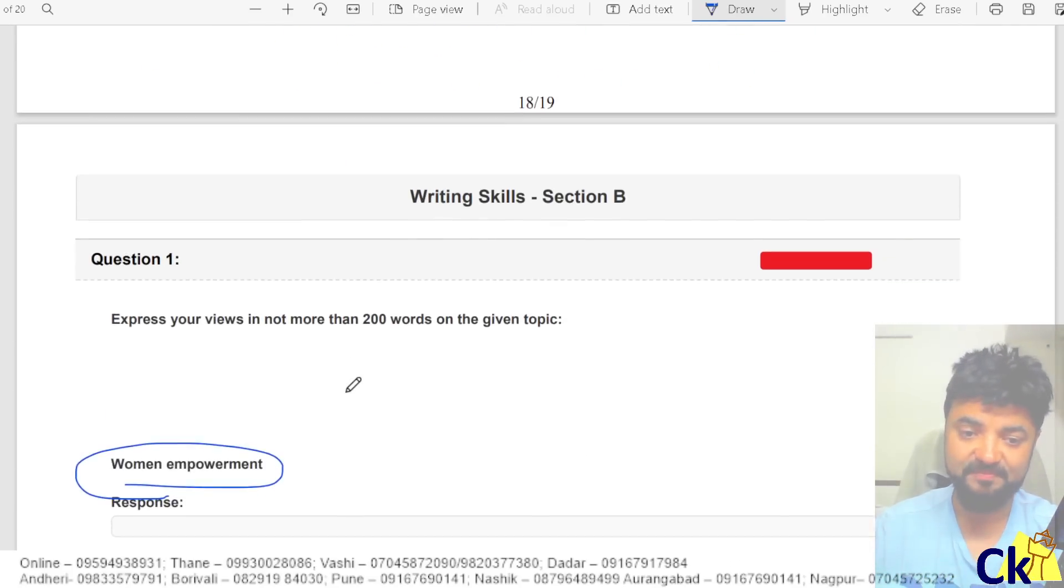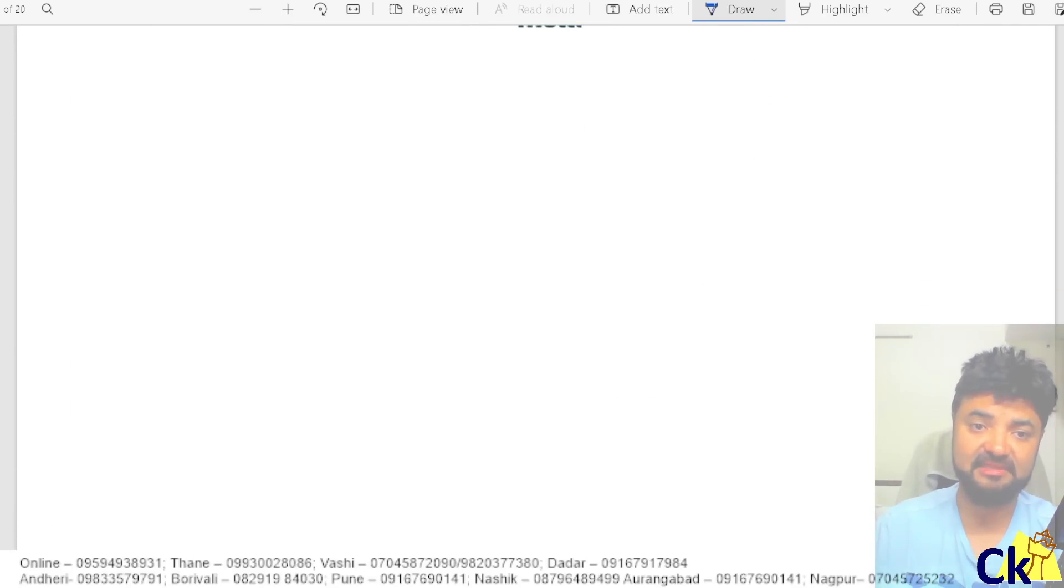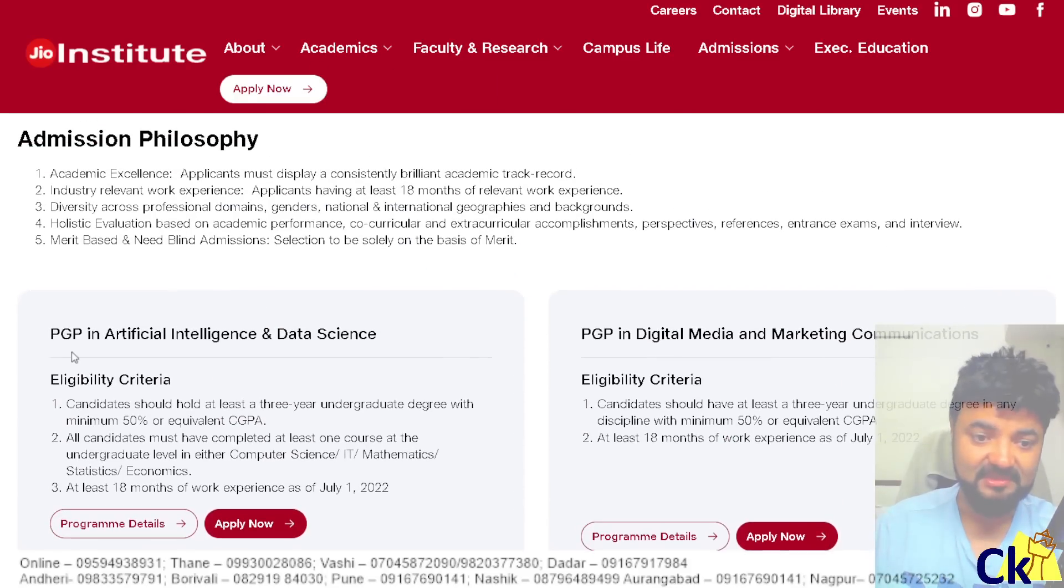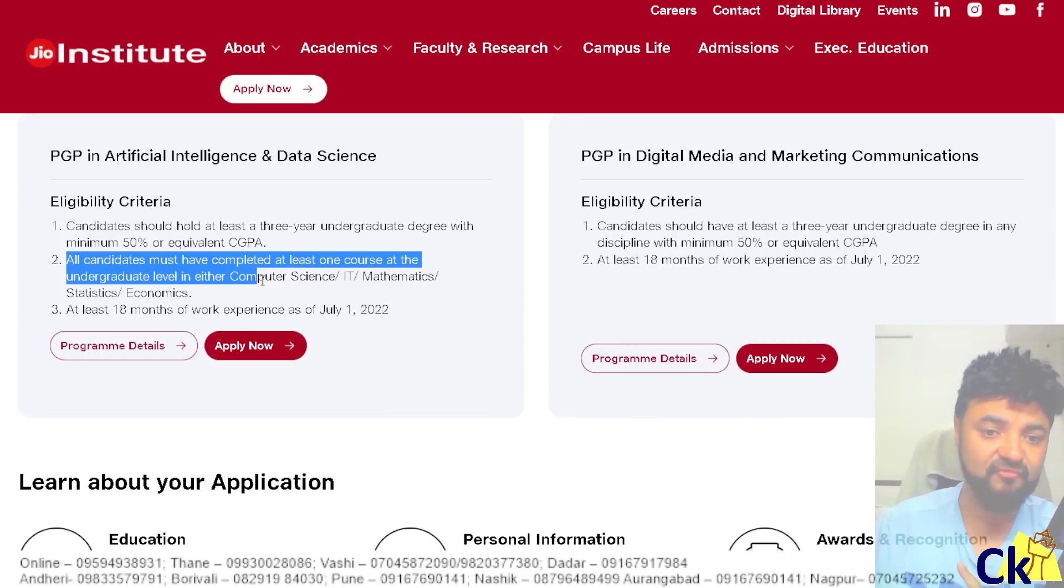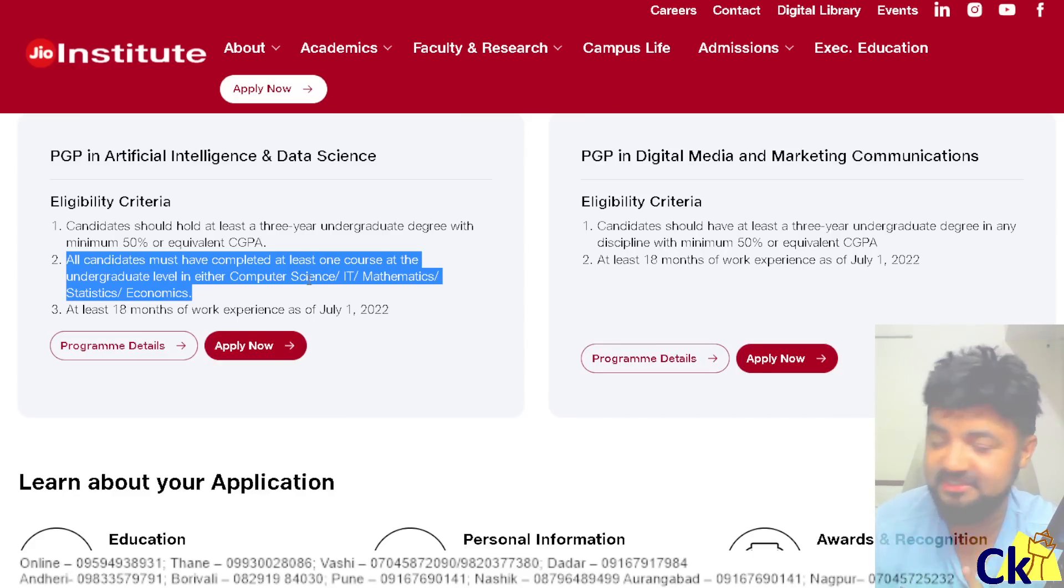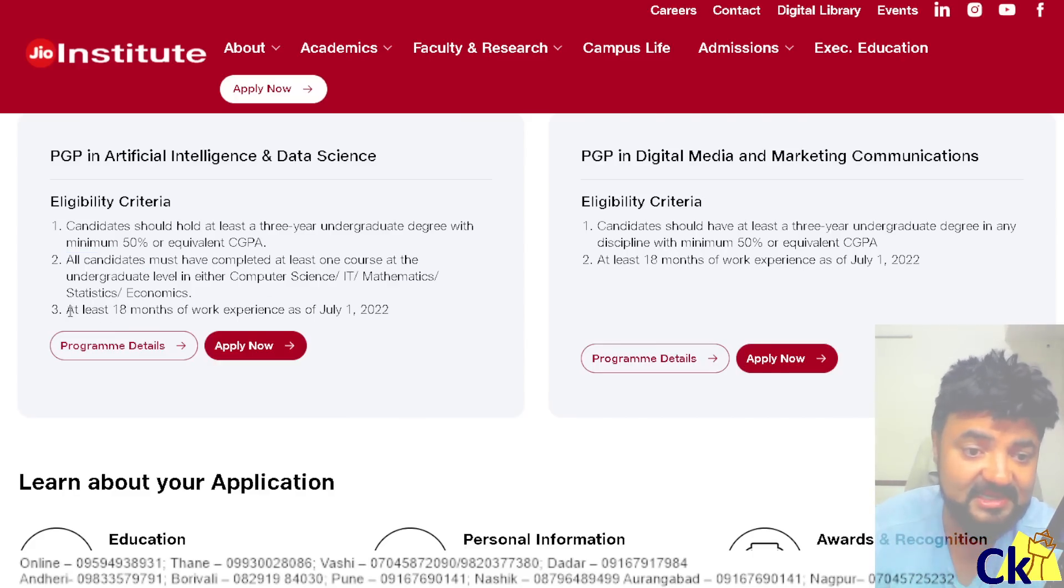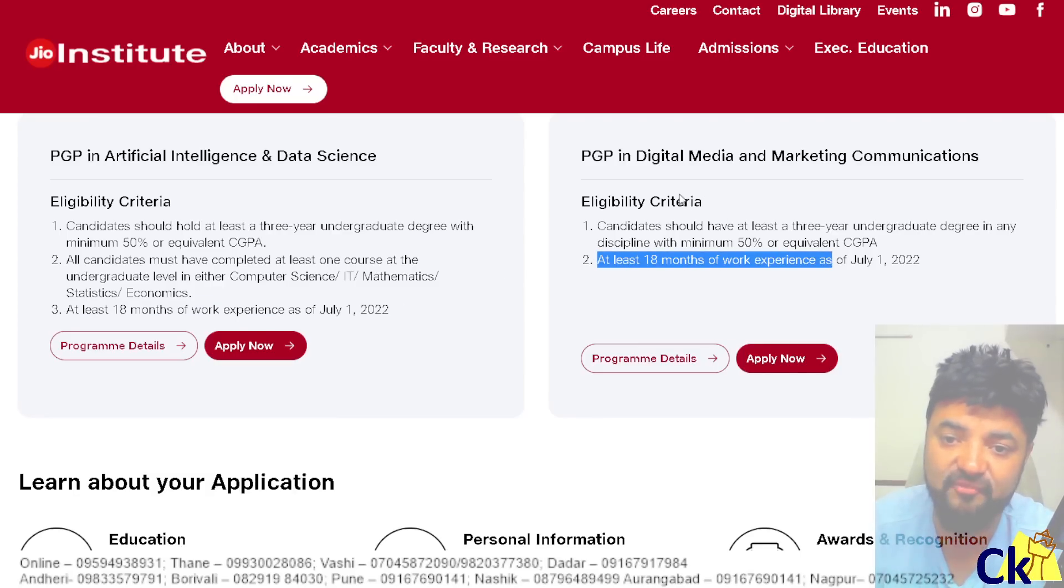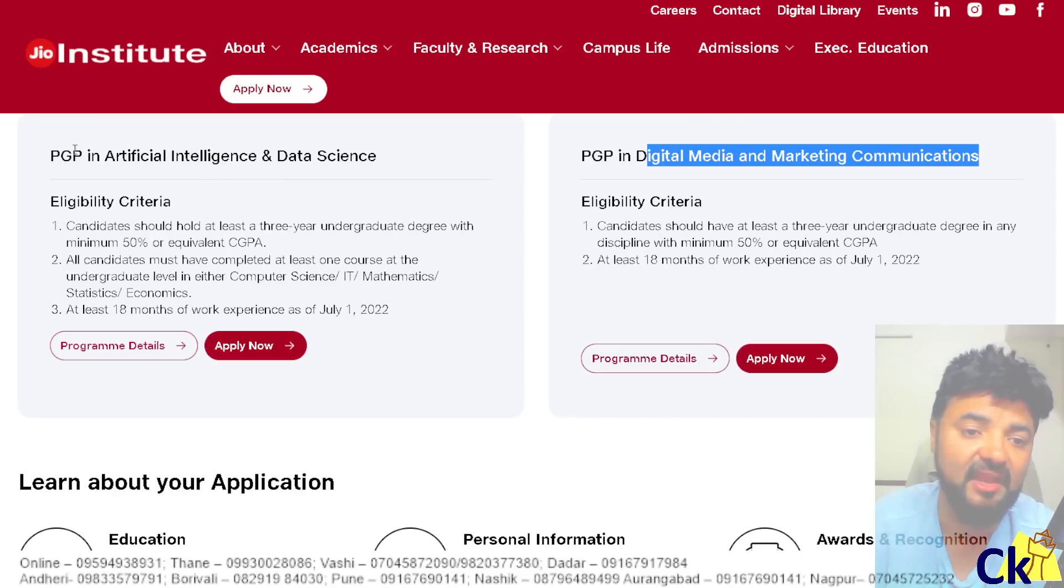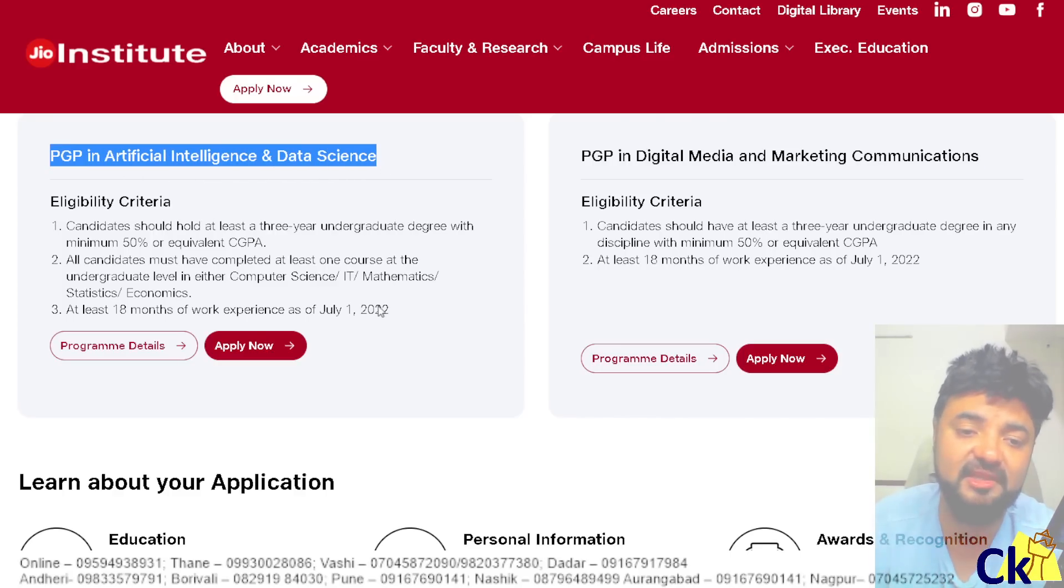Aapko dena hai to aap de sakte ho. Only condition is that you should have a minimum 50 percent in graduation number one. All candidates must have one course of computer science or IT or mathematics or stats or economics in undergraduate level. Engineers ko hota hai, non-engineer ko bhi hota hai. At least 16 month of work experience. Work experience unko chahiye dono courses ke liye, for the digital media and marketing communication and AI way intelligent data science. Dono ke liye unko 18 months ka minimum work experience chahiye.